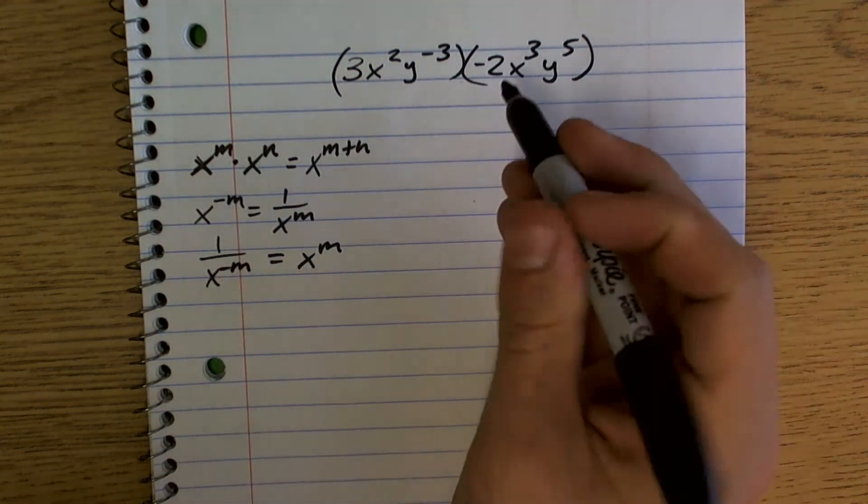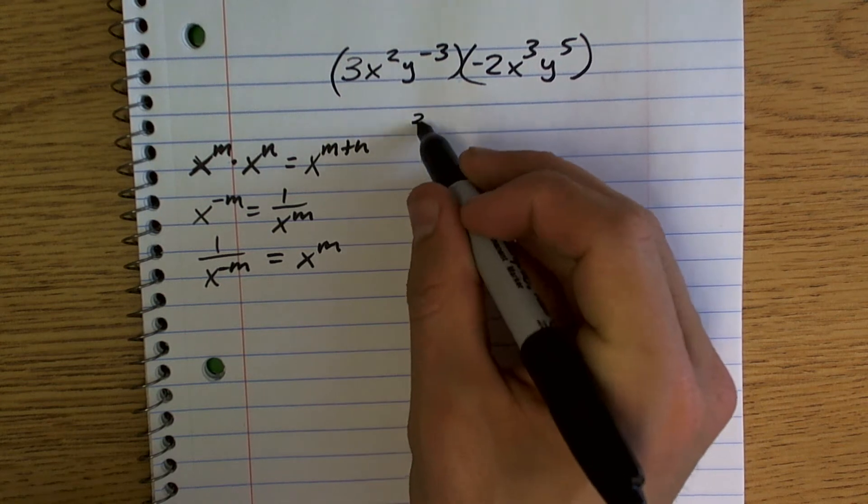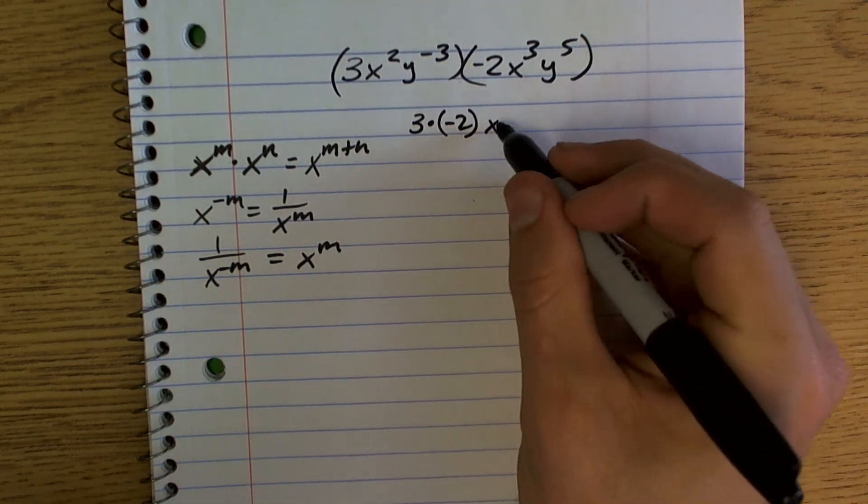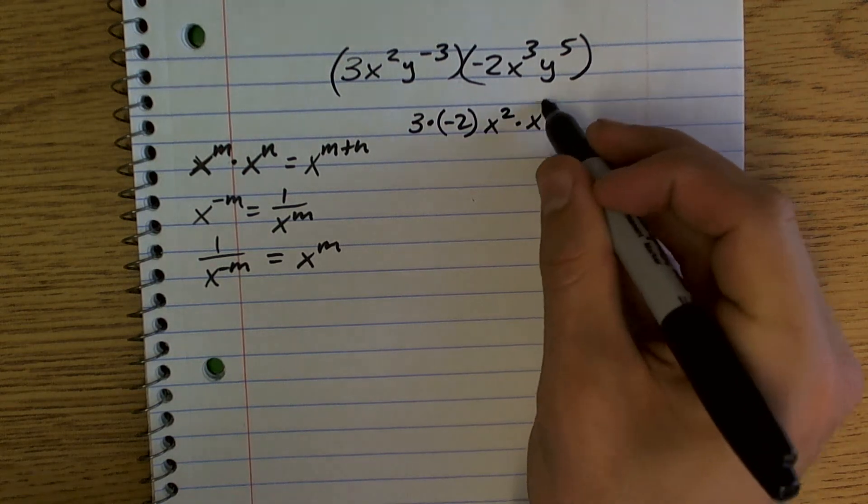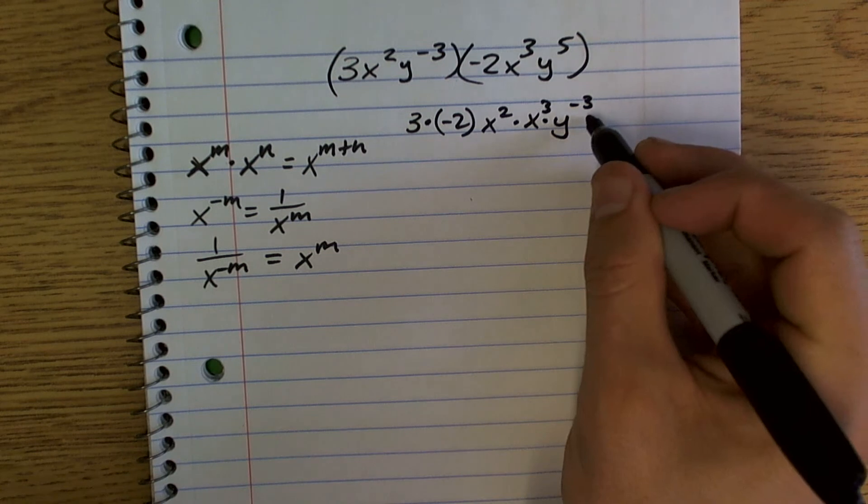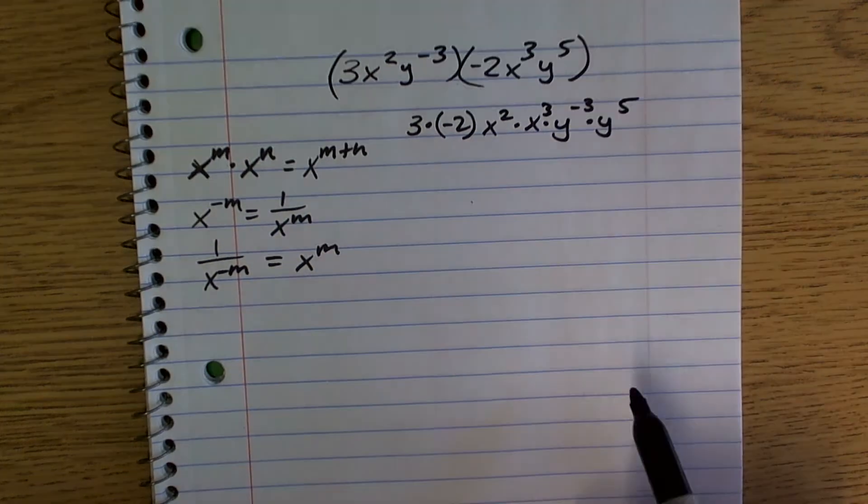Numbers are like terms, we're going to multiply them. So what I'm going to do is I'm just going to write this out as 3 times negative 2, x squared times x cubed, y to the negative third times y to the fifth. All right?